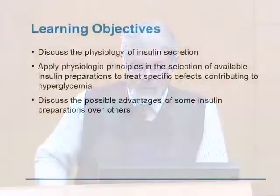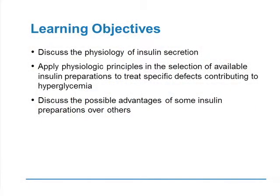As you are no doubt aware, this is the third of a three-part presentation on type 2 diabetes. In this particular section, I'm talking about insulin and how you can use insulin in the process of the treatment of type 2 diabetes. The objectives here are to discuss the physiology of insulin secretion, to apply these physiologic principles in the selection of available insulin preparations to treat the specific defects contributing to hyperglycemia, and discuss the possible advantages of some insulin preparations over others.